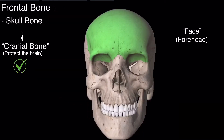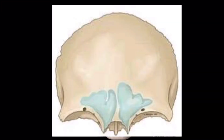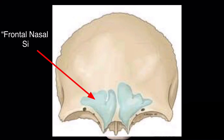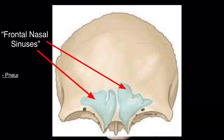That's why it is included in the cranial bones and not in the facial bones. In this diagram you can see that in the frontal bone are present the frontal nasal sinus, so the frontal bone is a pneumatic bone. Pneumatic bones are those bones in which an air-filled cavity is present.